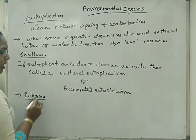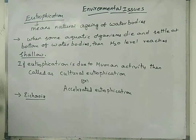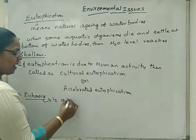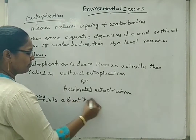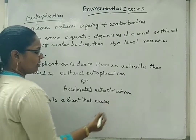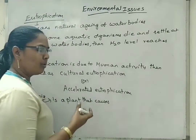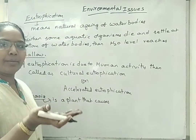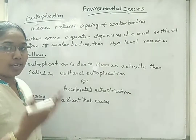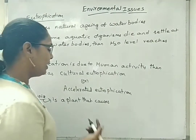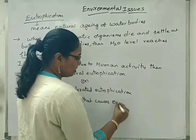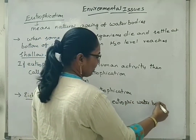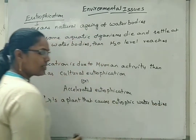This eutrophication leads to formation of eutrophic water bodies — a plant that grows more and more in water so that it clogs the water, blocking the passage of oxygen from air into the water and also the availability of oxygen to other organisms. Fish populations also decrease. This causes eutrophic water bodies in which other organisms will be dead.